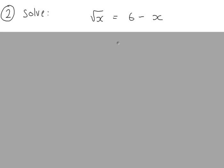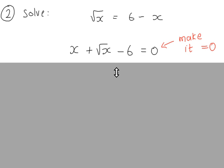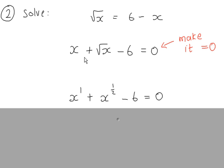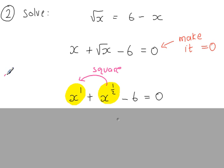Next example: root x equals 6 minus x. This does not even look like a disguised quadratic, but let's persevere. First, take all terms to one side to make the equation equal to 0. Using index form, x to the power of 1 and root x is x to the power of a half. Looking at these terms: if you take x to the power of a half and square it, does it give x to the power of 1? It does, because x to the half times x to the half adds the indices — a half plus a half equals 1.